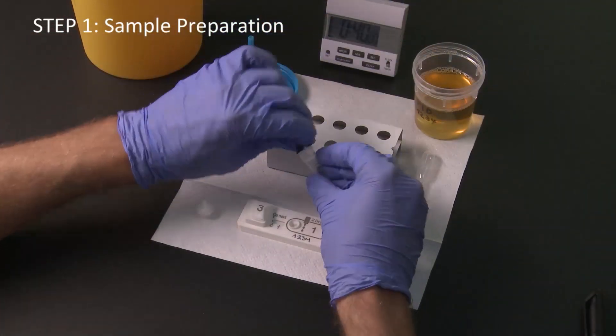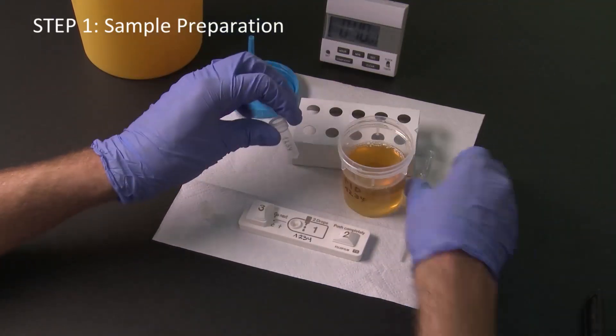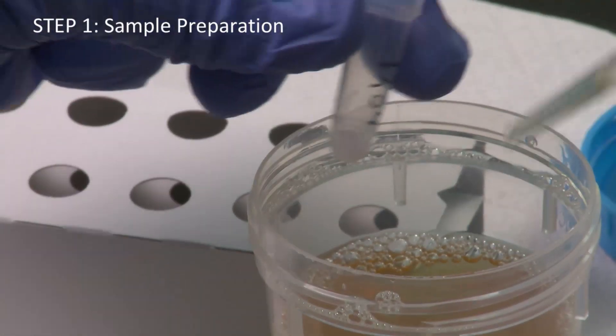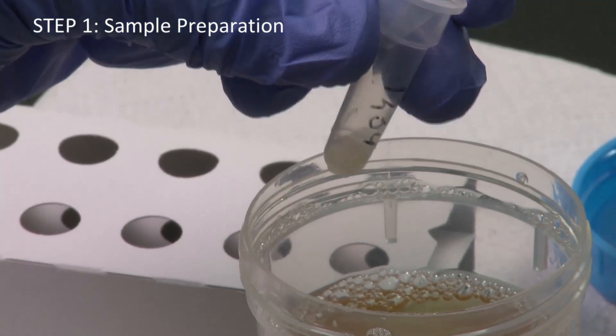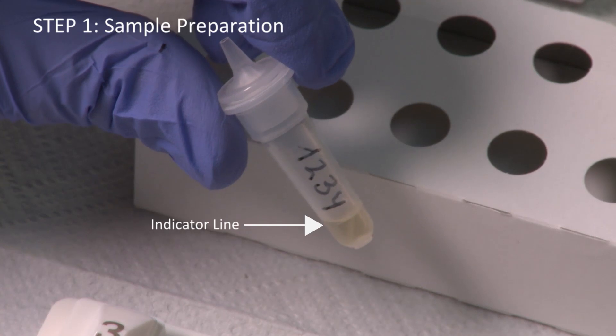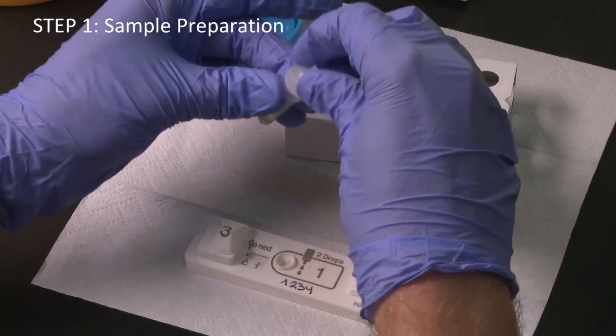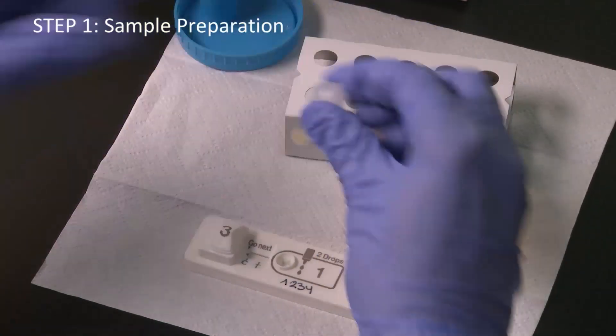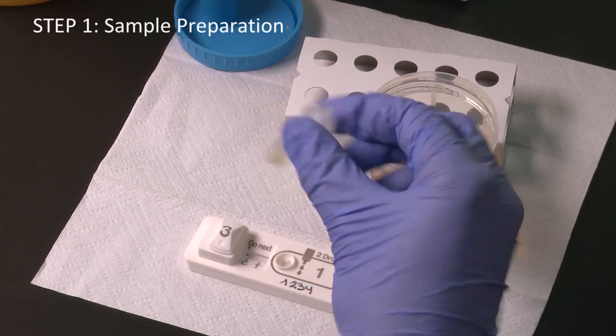Remove the seal from the tube. Use the pipette to add urine up to the indicator line. Put the nozzle on the tube and gently mix the tube ten times without inverting the tube.